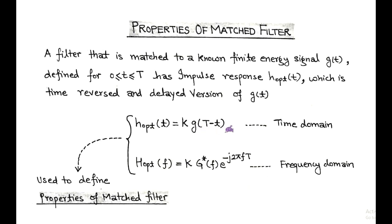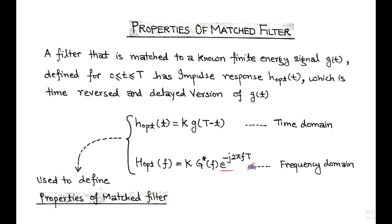The optimum impulse response h(t) equals k times g(T - t) in the time domain. In the frequency domain, it is given by H(f) equals k times G*(f) e to the power minus j2πfT, where G*(f) is the complex conjugate of G(f).